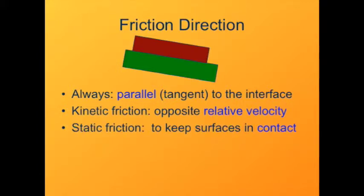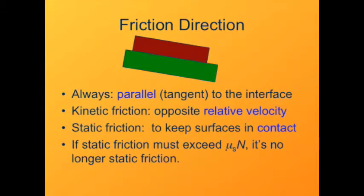Static friction is in whatever direction is necessary to keep the surfaces in contact. And if it turns out that the maximum magnitude of static friction — given by the formula mu times N — is not enough to keep the object static, well then it won't be static, and we'll be back to kinetic friction.